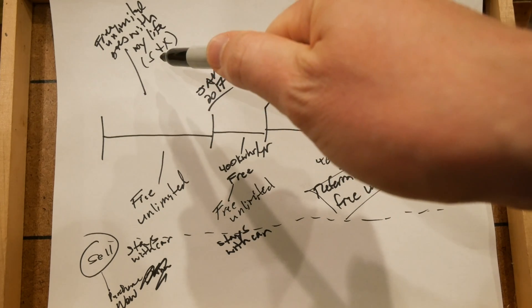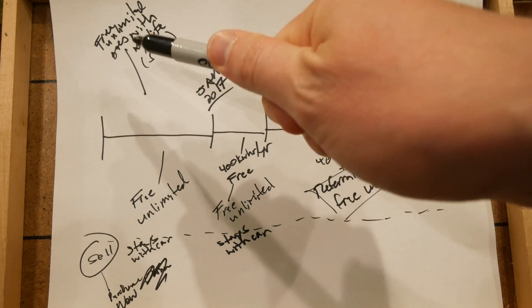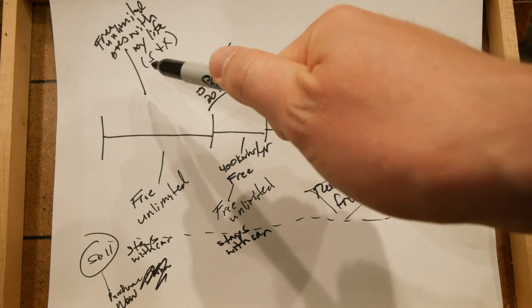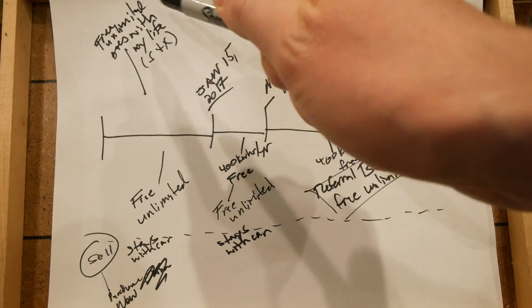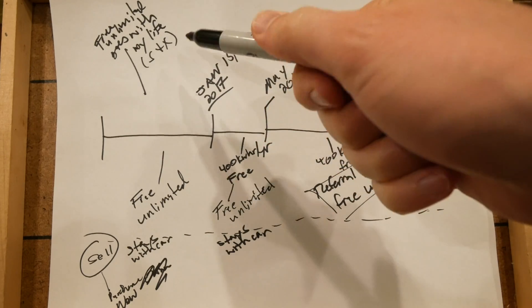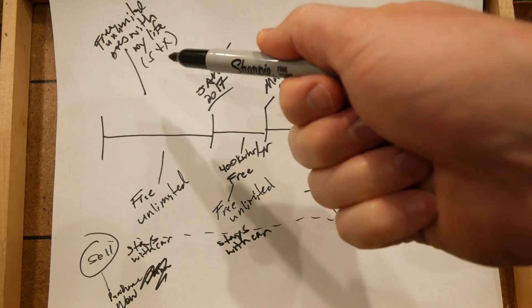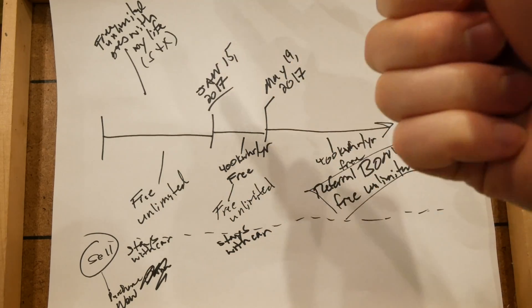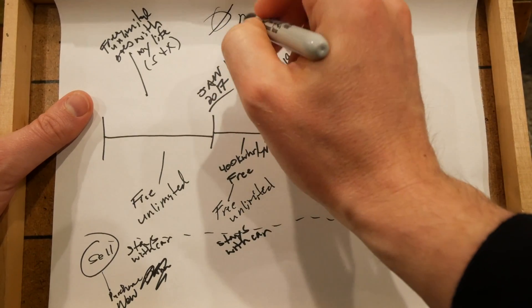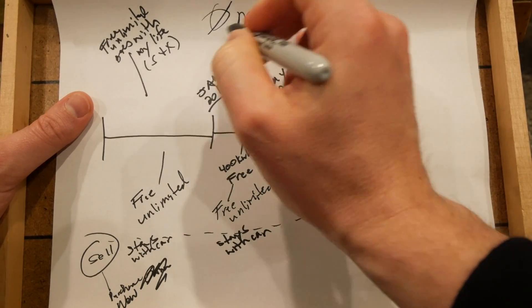Free unlimited goes with my life for S and X. So people that have bought one in this window, they get automatic unlimited free supercharging even if I buy another S or X in the future. So basically, I have free supercharging for life, for new S and Xs, not for Model 3.